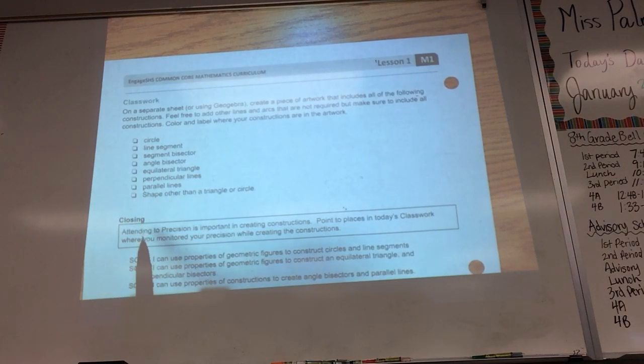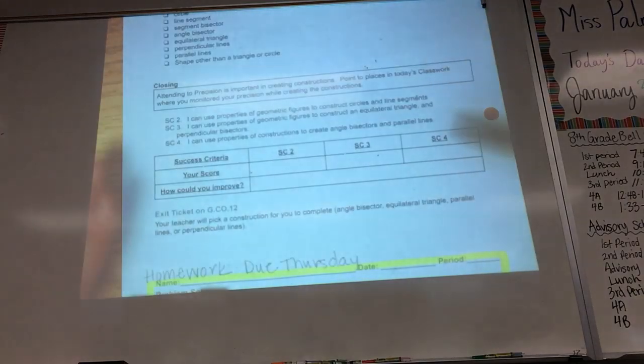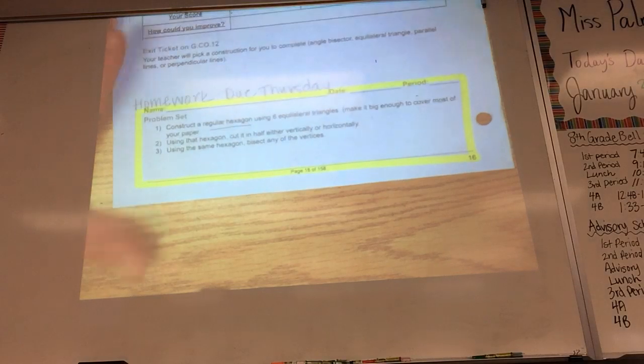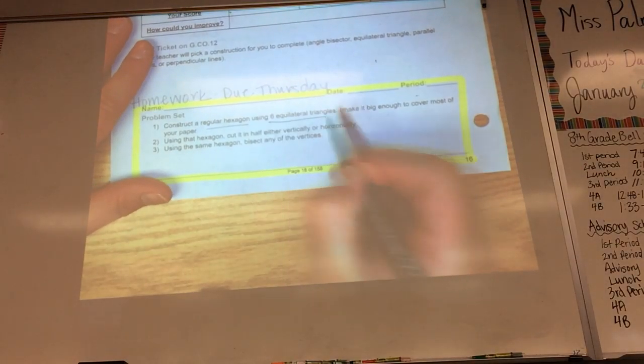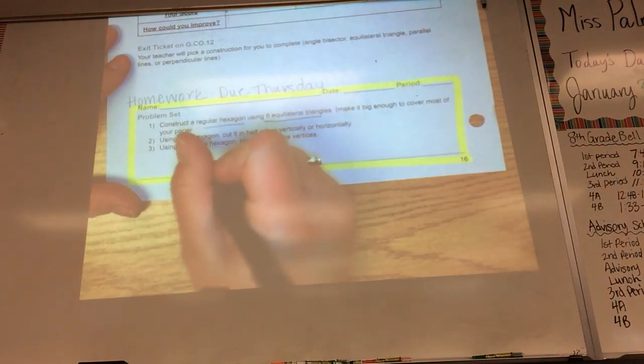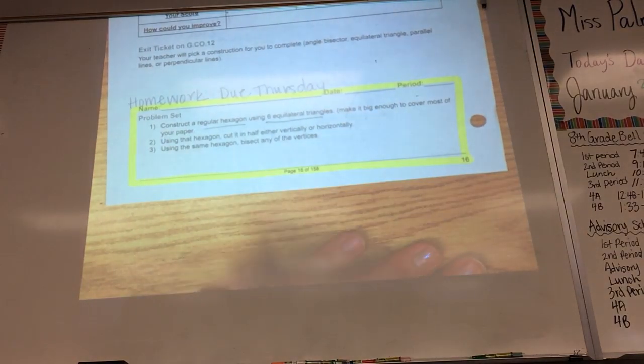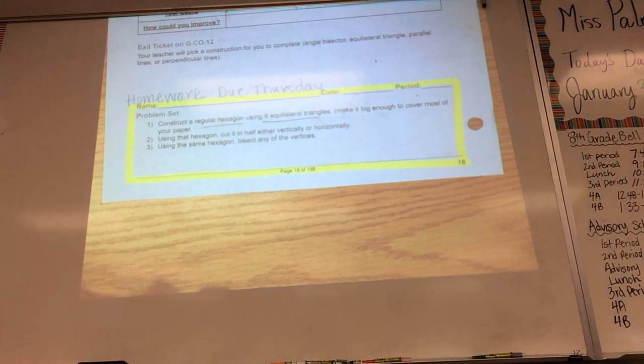Color pencil would work. So you need to have all of these pieces. You need to also construct a regular hexagon. What's a regular hexagon? So you probably already did that. You might have done it already. Then use that hexagon to cut it in half, either vertically or horizontally. Using the same hexagon, bisect any of the vertices.